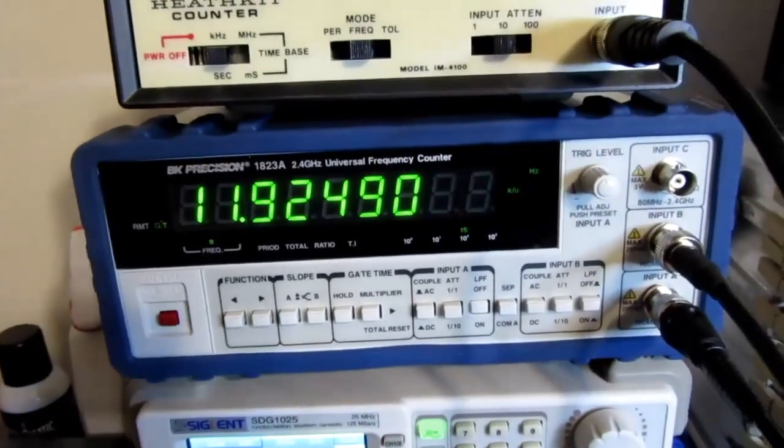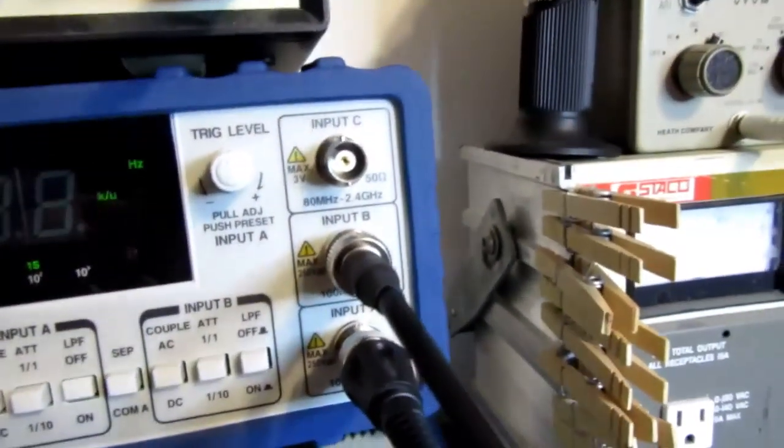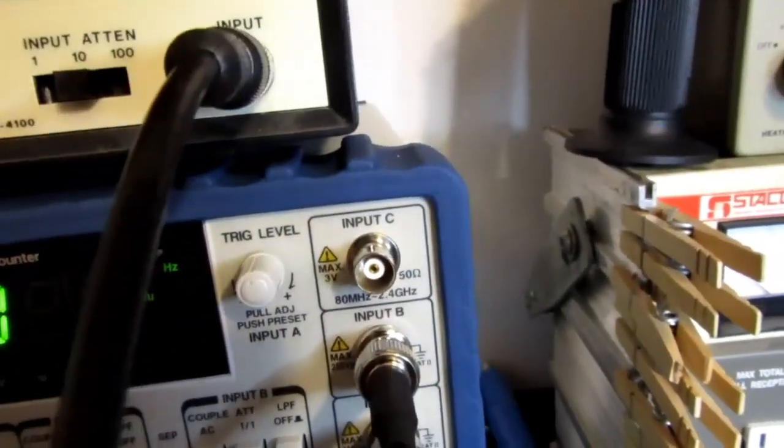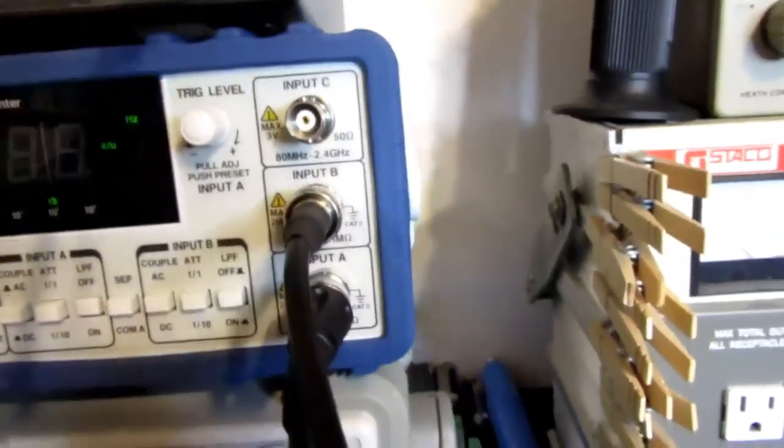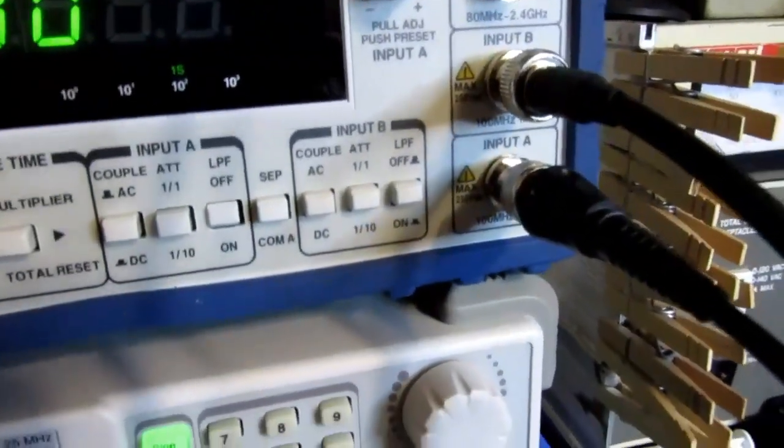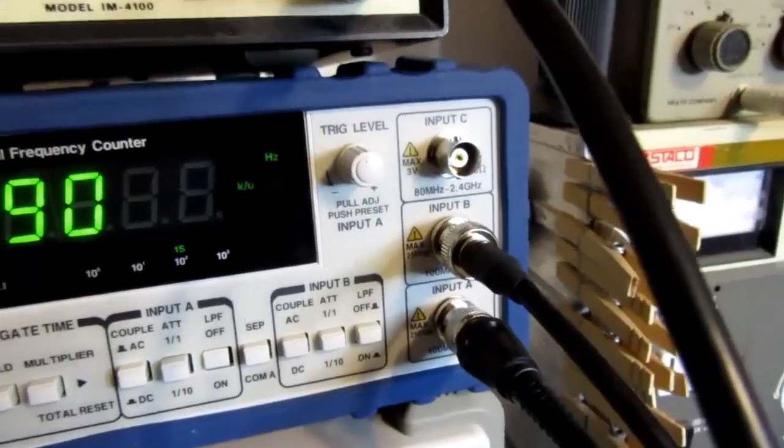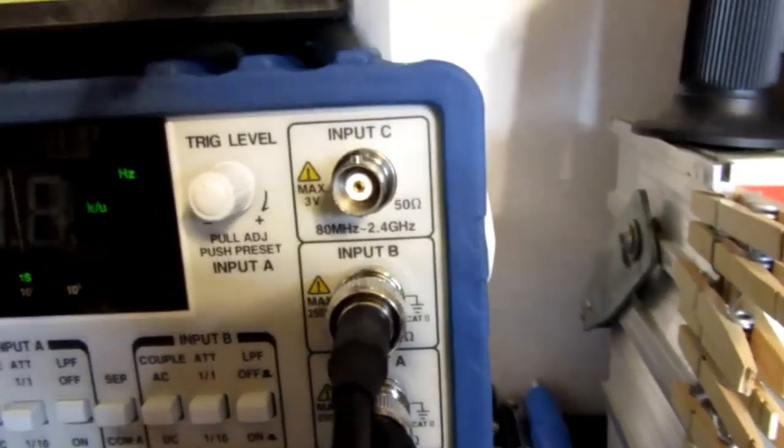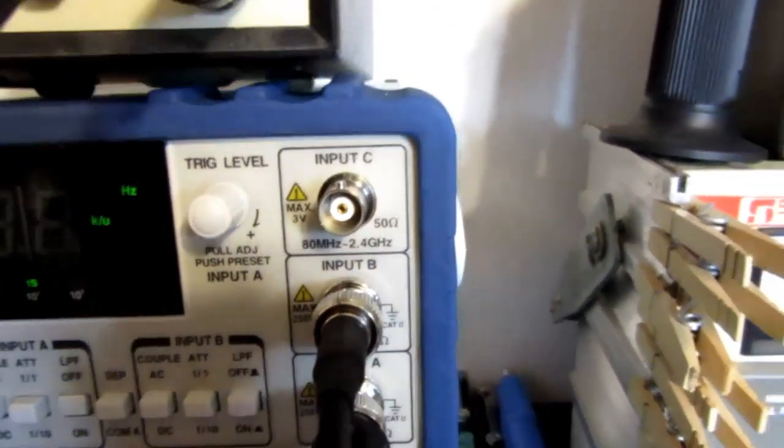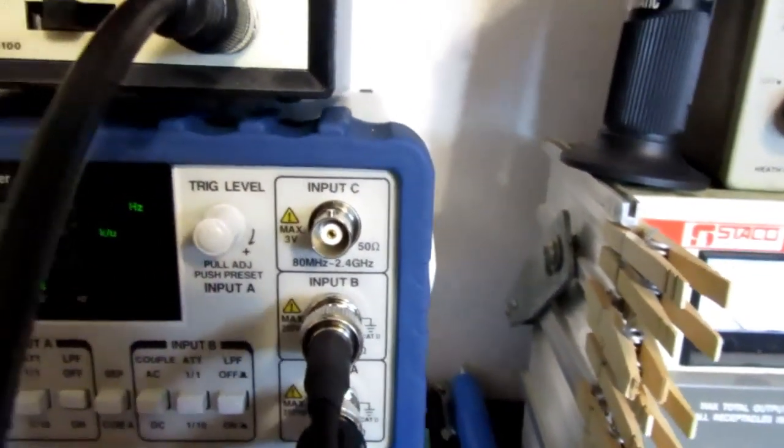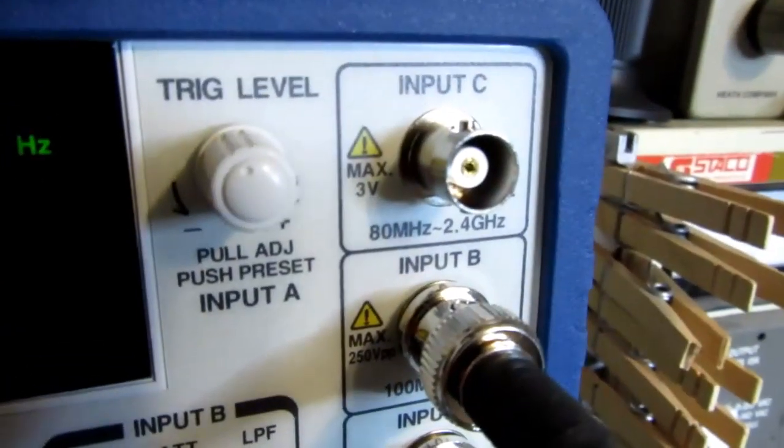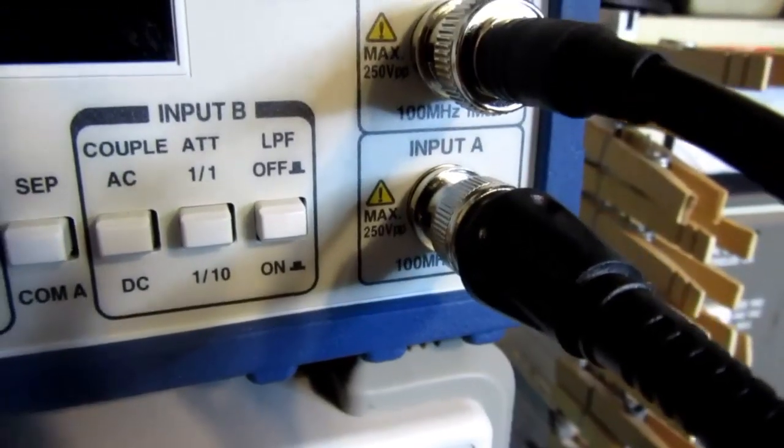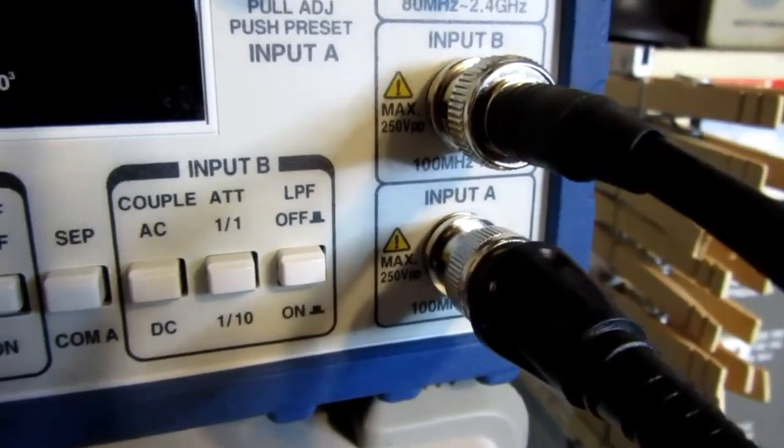This can go up to 2.4 gigahertz but not on all the inputs. It actually has three inputs here, A, B, and C, and only input C is the one that's capable of the highest frequency response. The channels A and B are only good up to 100 megahertz. To get to the 2.4 gigahertz, one needs to use input C, and that's a low impedance input of 50 ohms. It's really intended for radio work and things like that, and it's also limited to three volts maximum, whereas the inputs A and B can do 250 volts peak-to-peak.